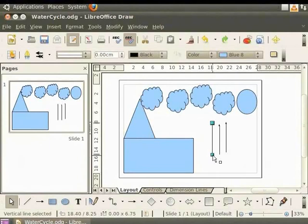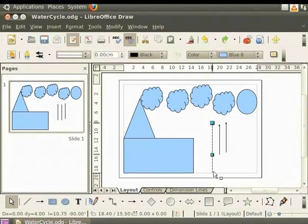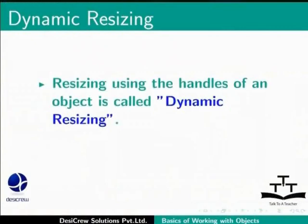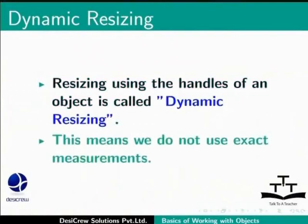Now press the Shift key on the keyboard. Hold the left mouse button and using the arrow's handle, drag it down. It's much easier to resize the object if you press the Shift key also, isn't it? Resizing using the handles of an object is called dynamic resizing. This means we do not use exact measurements. We will learn to exactly resize objects in later tutorials.